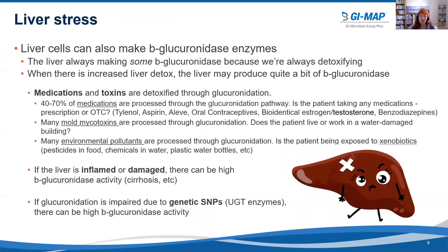Another reason is liver stress. Bacteria aren't the only things that can produce beta-glucuronidase — the body can too, and the liver is one of the organs able to produce beta-glucuronidase enzymes. The liver is always making some beta-glucuronidase because we're always detoxifying, but when there is increased liver detoxification, the liver may produce quite a bit of it. In fact, 40% to 70% of medications are processed through the glucuronidation pathway.